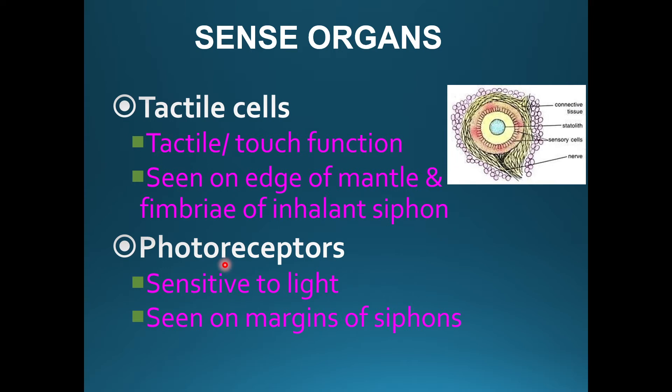After that, photoreceptors are found at the siphons at the mantle margin. These are the cells that are sensitive to light.